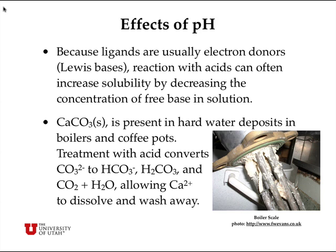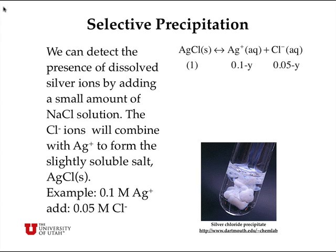If you treat your coffee pot with vinegar, which is acetic acid, bubbles are made — that's CO₂ bubbling away and helping to dissolve the hard water deposits. Now let's turn our attention to selective precipitation. We can detect the presence of dissolved silver ions, for example from silver nitrate, by adding a small amount of sodium chloride to the solution, because the chloride ions will combine with the silver to form the slightly soluble salt silver chloride. The picture here shows white silver chloride precipitating from solution when chloride is added.